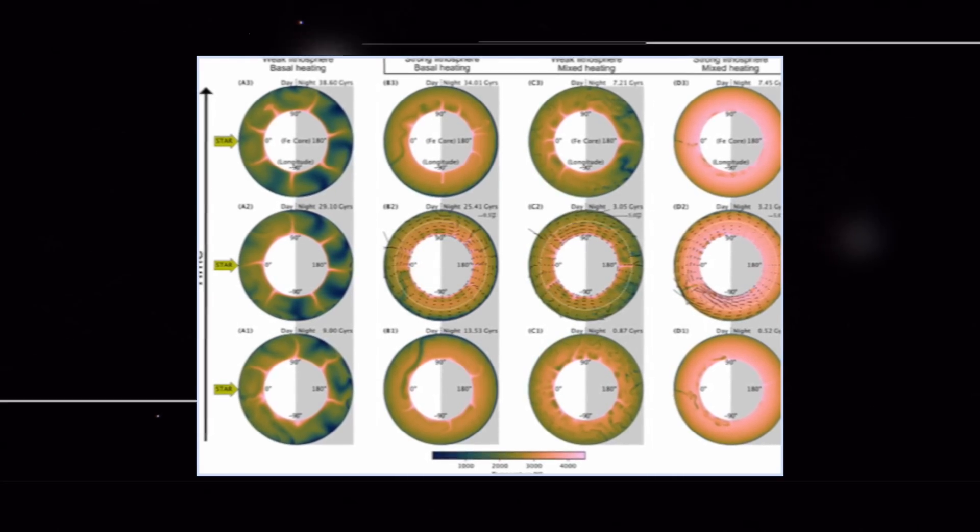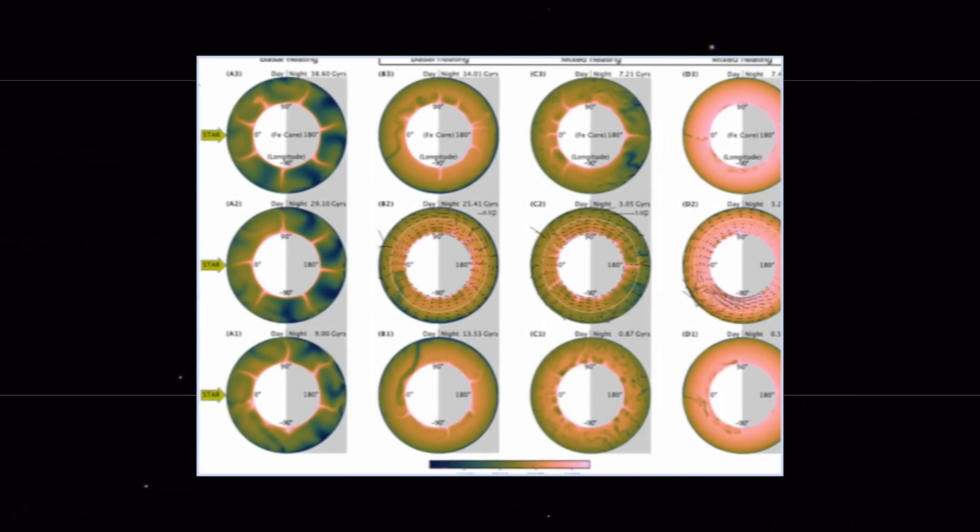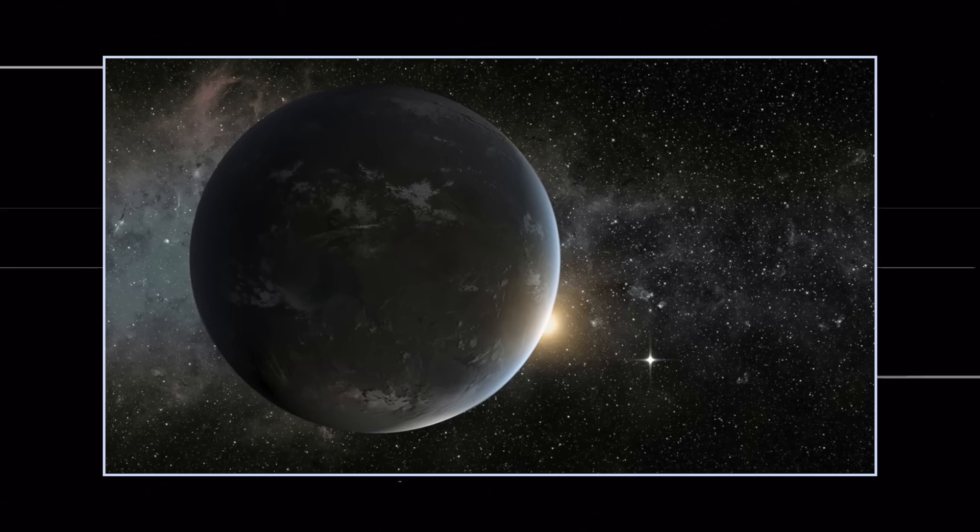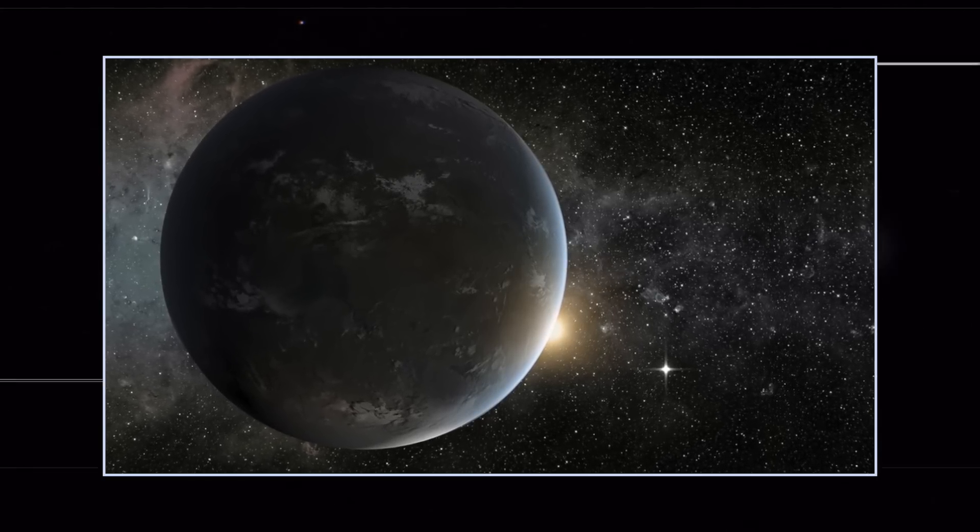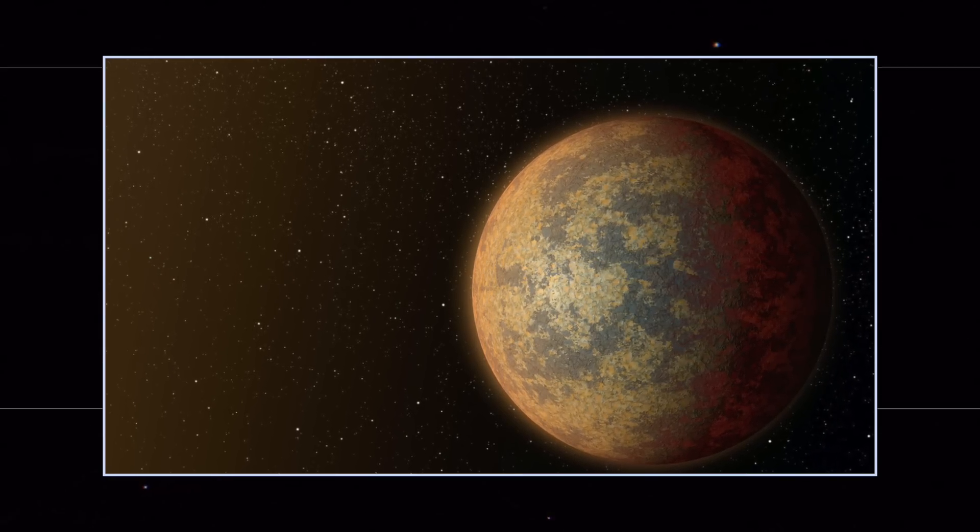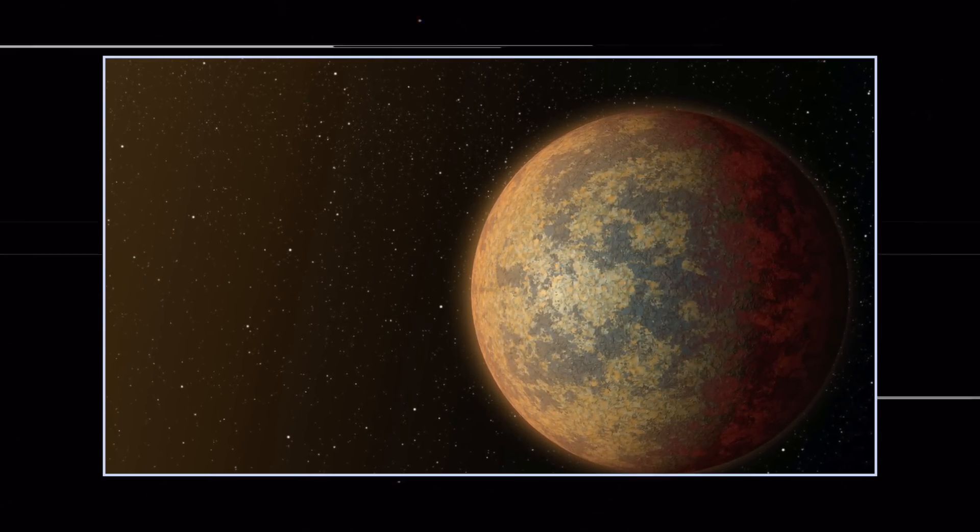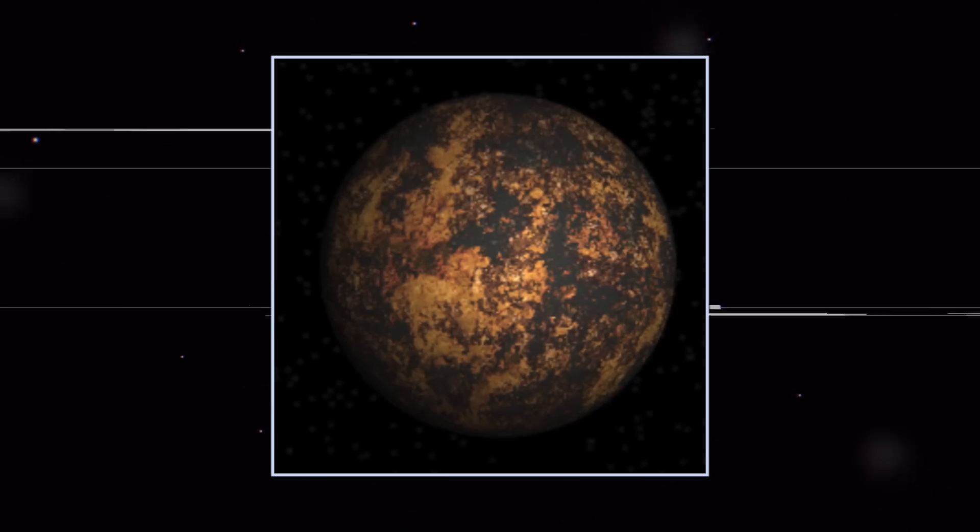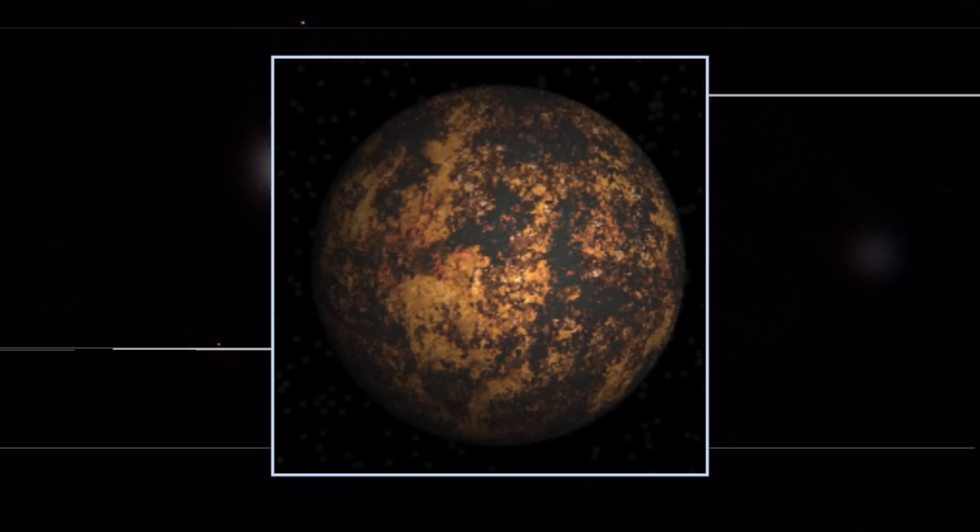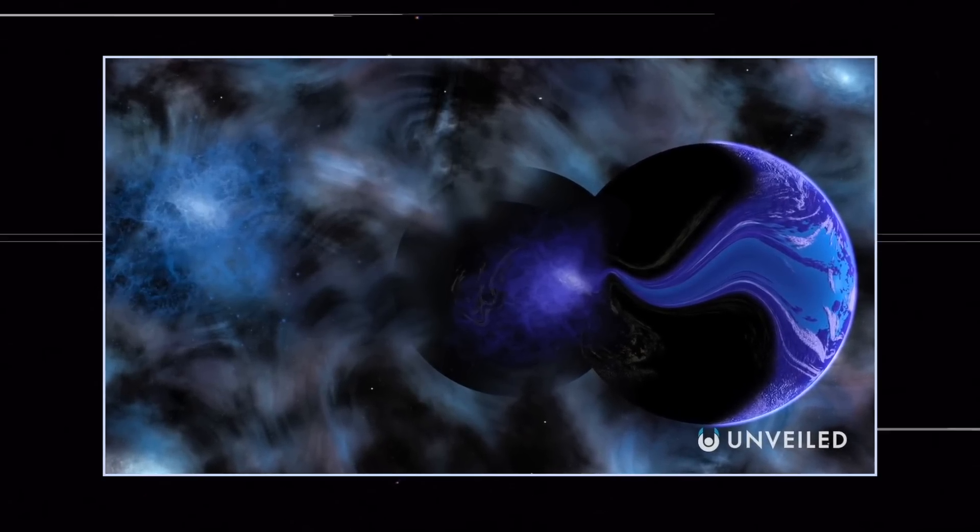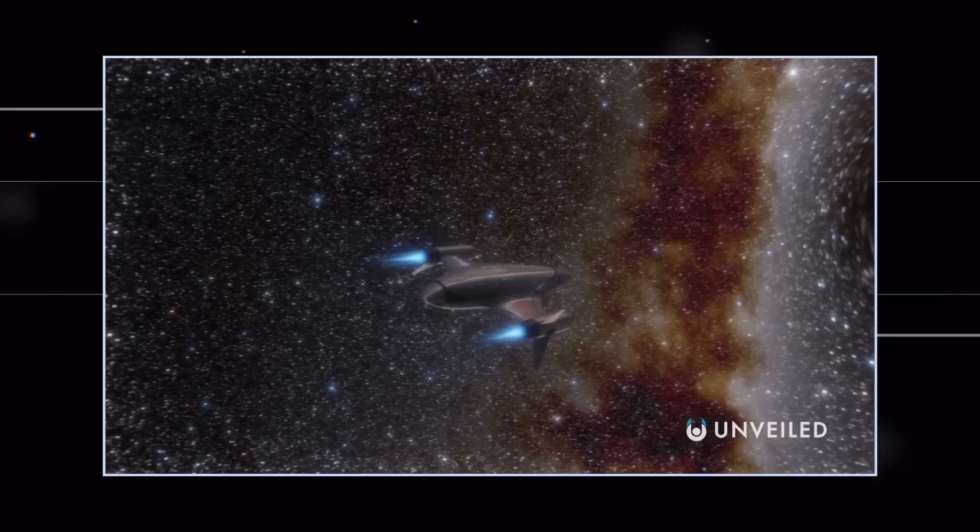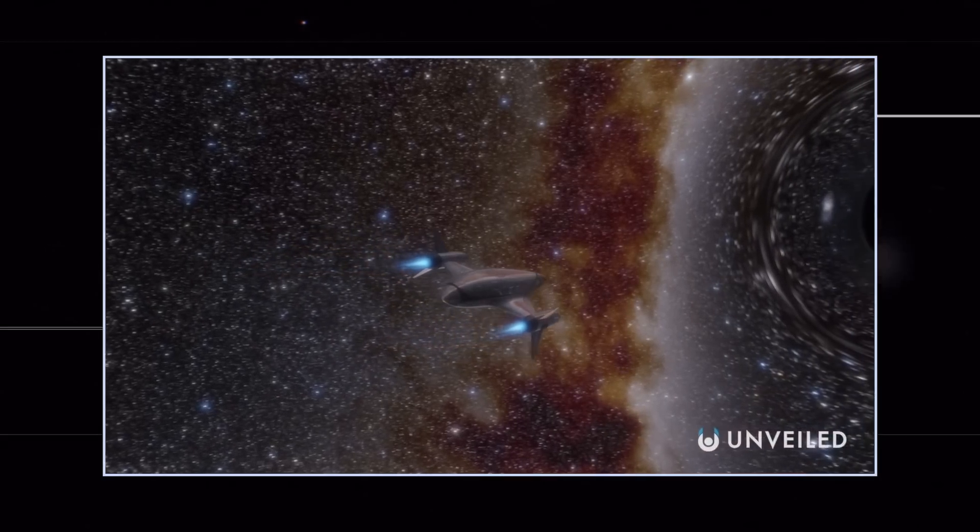Like 55 Cancri e, LHS 3844 b orbits extremely close to its star, completing one revolution in 11 hours. However, because its star is relatively small and cool, the planet is not hot enough for the surface to be molten. Additionally, Spitzer observations indicate that the planet is very unlikely to have a substantial atmosphere. So what is the surface of LHS 3844 b made of?